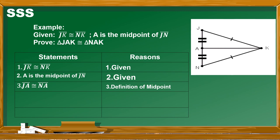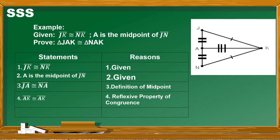For statement 4, looking at the illustration, we can use segment AK. We can say segment AK is congruent to segment AK, and the reason is the reflexive property of congruence. Now, since we have identified all the congruent parts of our triangles, we can say that triangle JAK is congruent to triangle NAK by the SSS postulate.